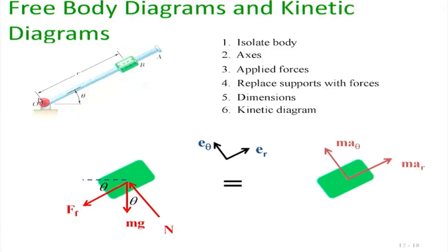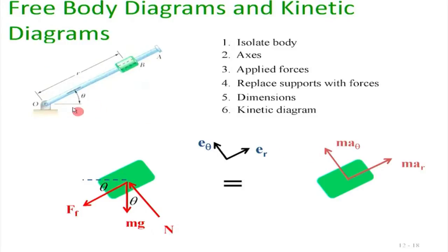From an inertial frame perspective — fixing a frame XY at origin O — we see θ changing and the sleeve's position r changing. The accelerations aᵣ and aθ are in this inertial frame. Newton's law works only in inertial frames, so all accelerations must be with respect to a frame at rest or moving with uniform velocity.